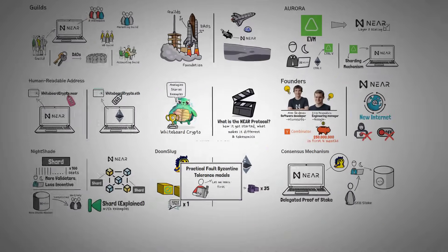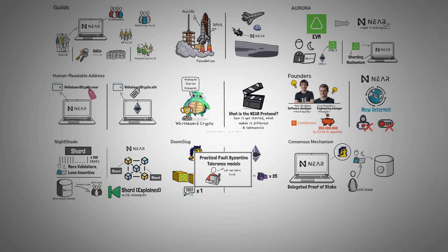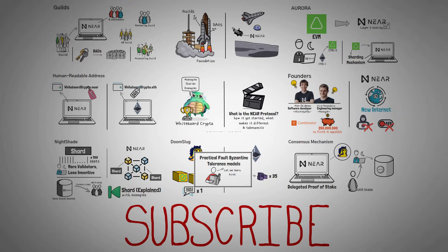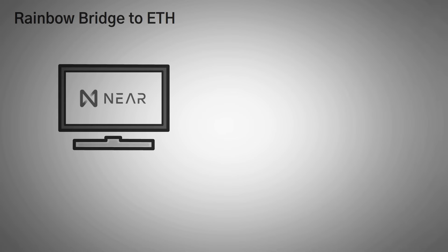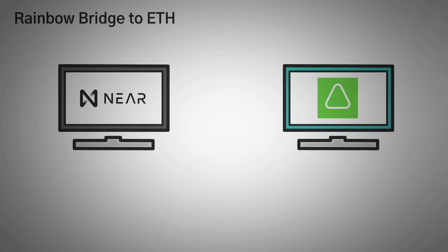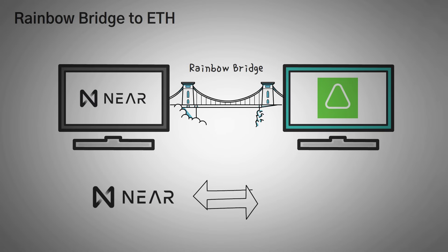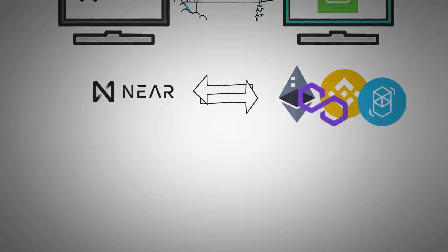The ideas of Doomslug, Nightshade, and Aurora may deserve their own videos, so make sure to hit that subscription button to get notified of new videos. I should also mention the rainbow bridge. To move from the main chain to the Aurora network, NEAR created a blockchain bridge they call the rainbow bridge. You can currently move your Ethereum back and forth, and the developers are planning on allowing other chain transfers in the future, like Binance Smart Chain, Matic, Phantom, and other Ethereum lookalikes.